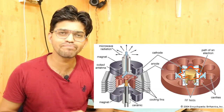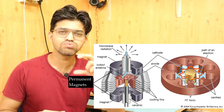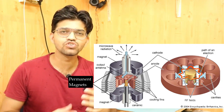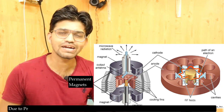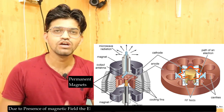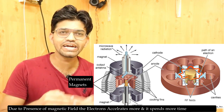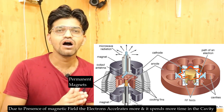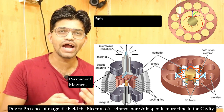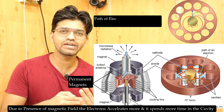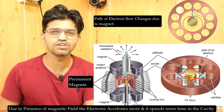To address this, there are two permanent magnets placed on the top side and the bottom side. Due to the presence of this magnetic field, the electron gets accelerated more and spends more time in the cavity, and due to spending more time in the cavity, it produces more radio waves.